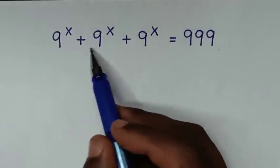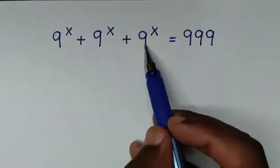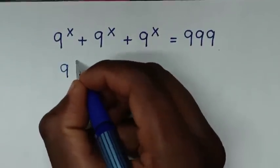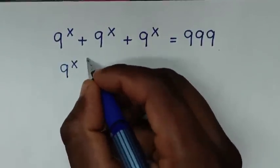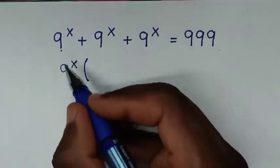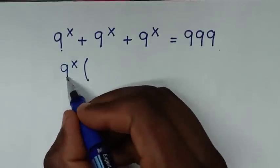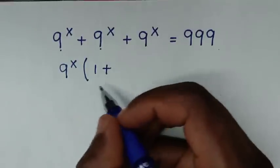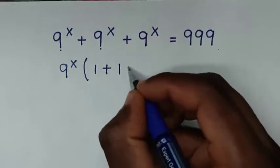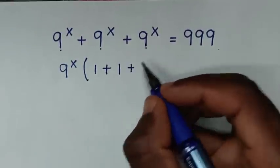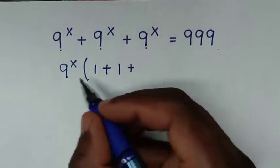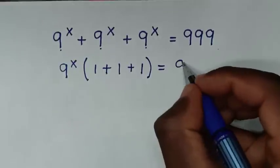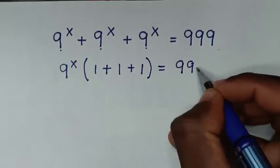Now from here, on the left side 9 power x is common, so we'll take 9 power x out of the bracket. Then 9 power x divided by 9 power x is 1, plus 9 power x divided by 9 power x is 1, in bracket, is equal to 999.